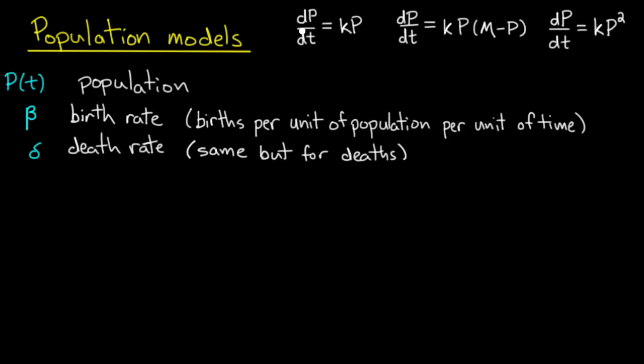If a population grows at a rate which is proportional to the size of the population itself, in other words dP/dt equals kP, then the result is exponential growth.